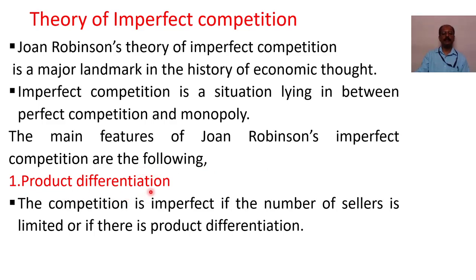Number 1: Product Differentiation. The competition is imperfect if the number of sellers is limited or if there is product differentiation. For example, toothpaste brands such as Close-Up, Ajanta, Sibak, Hamam, and Lifebuoy are all differentiated products competing in the same market.